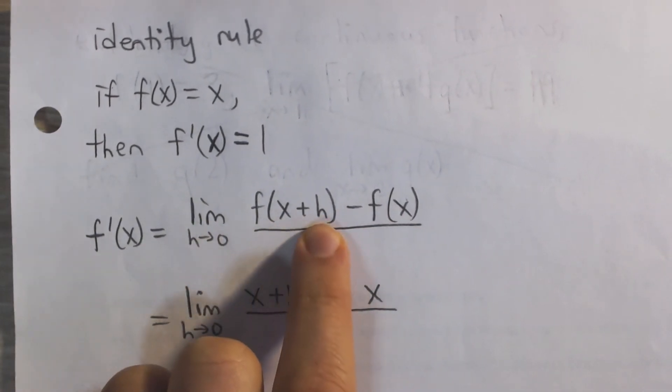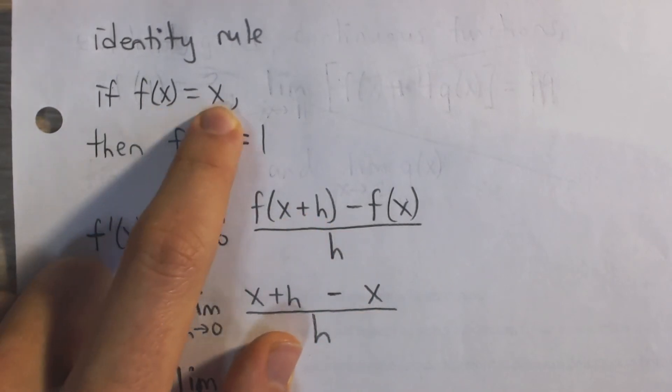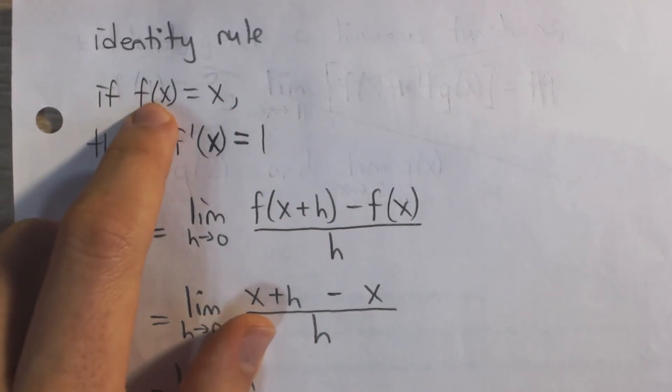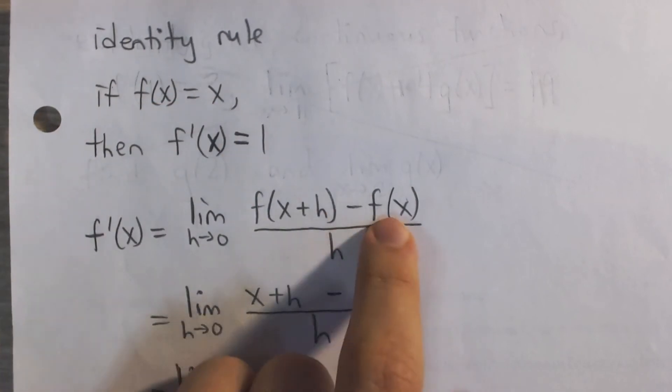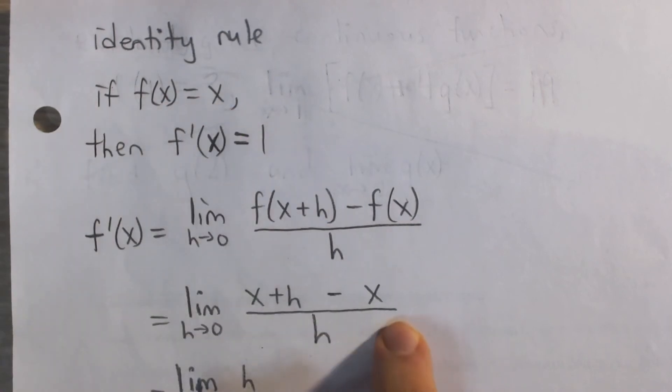And so what's f of x plus h? Well, it's just you plug in x plus h in for x into your function. And again, whatever you input into the function, that's what you're going to get out. So in other words, that's x plus h. Similarly here, f of x is, by definition, x.